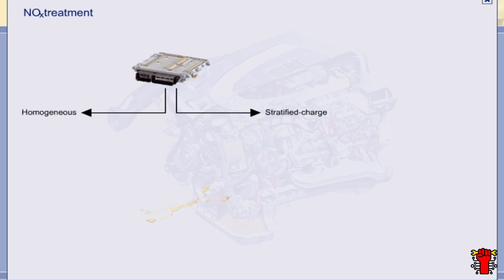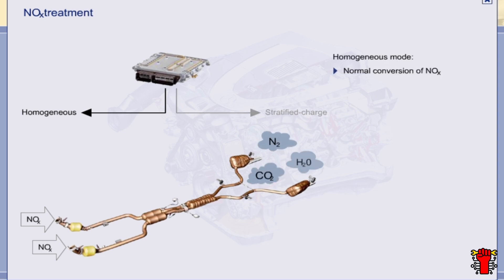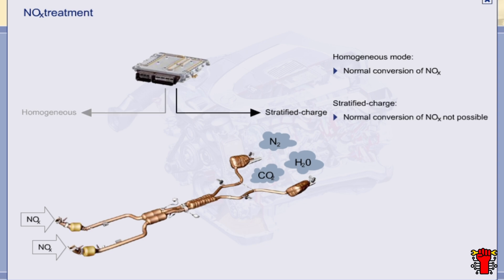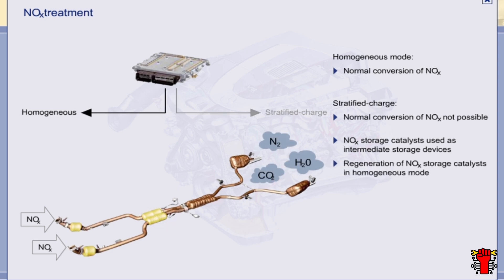Homogenous mode and stratified charge mode differ greatly when it comes to exhaust gas treatment. In homogenous mode, the oxides of nitrogen are converted along with other pollutants in the three-way catalysts as normal. In stratified charge mode, it is not possible to catalyze the oxides of nitrogen because of the very lean mixture — the three-way catalysts are ineffective. As a result, unconverted oxides of nitrogen are first stored in special NOx storage catalysts. These stores have limited capacity and must be continually regenerated by briefly switching the engine to homogenous mode, where a lambda value of less than one allows the stored oxides of nitrogen to be converted as normal.